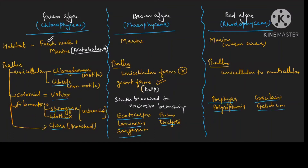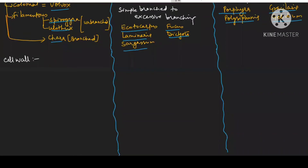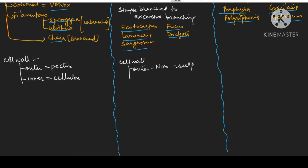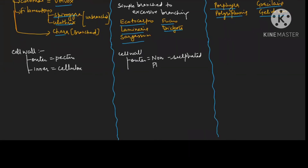Next criteria is with respect to the cell wall. In green algae, the outer layer is pectin and inner is cellulose. In brown algae, the outer layer is non-sulphated phycocolloid — specifically alginic acid — and the inner layer is cellulose.